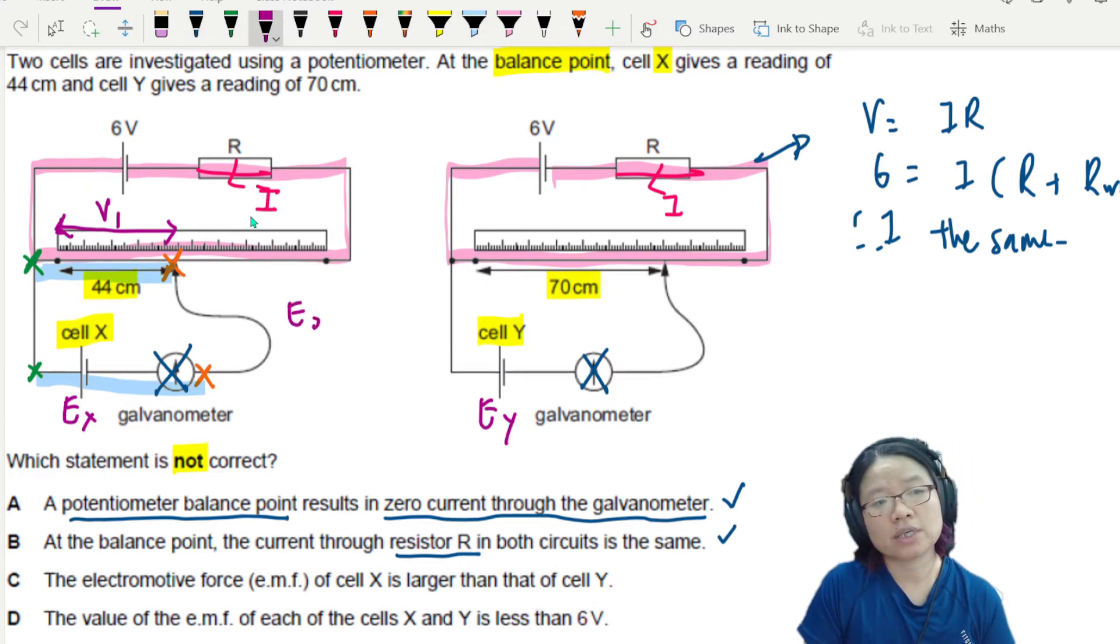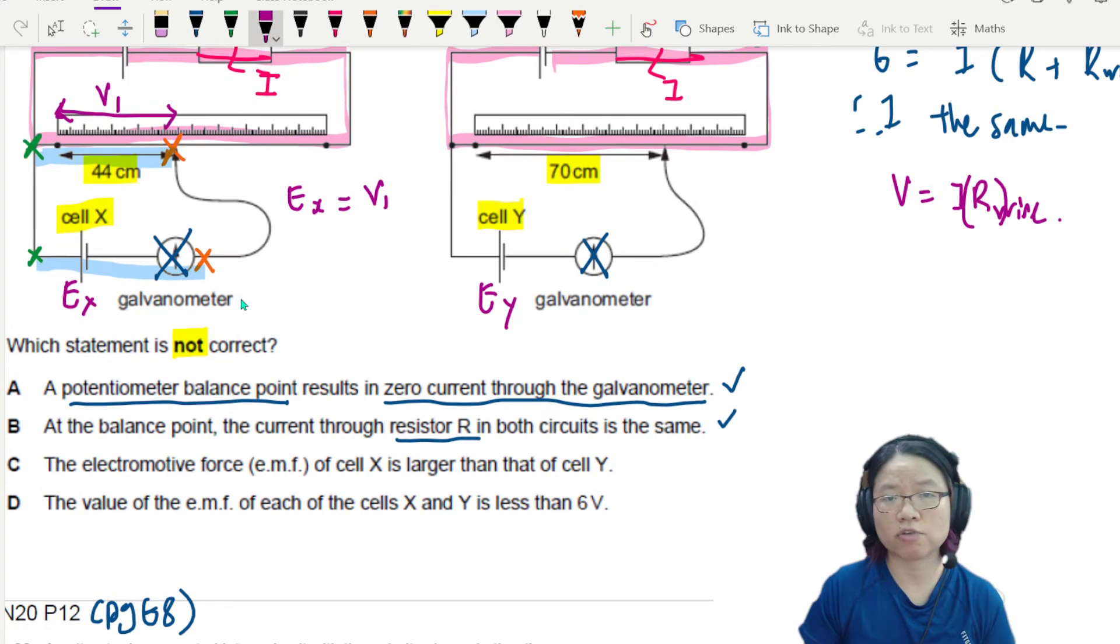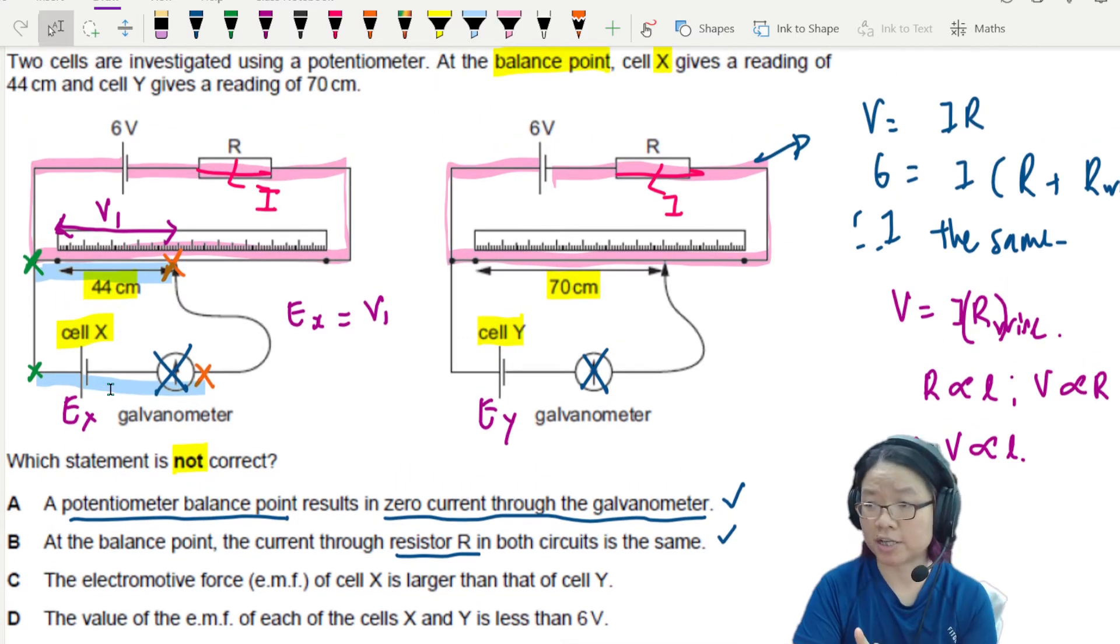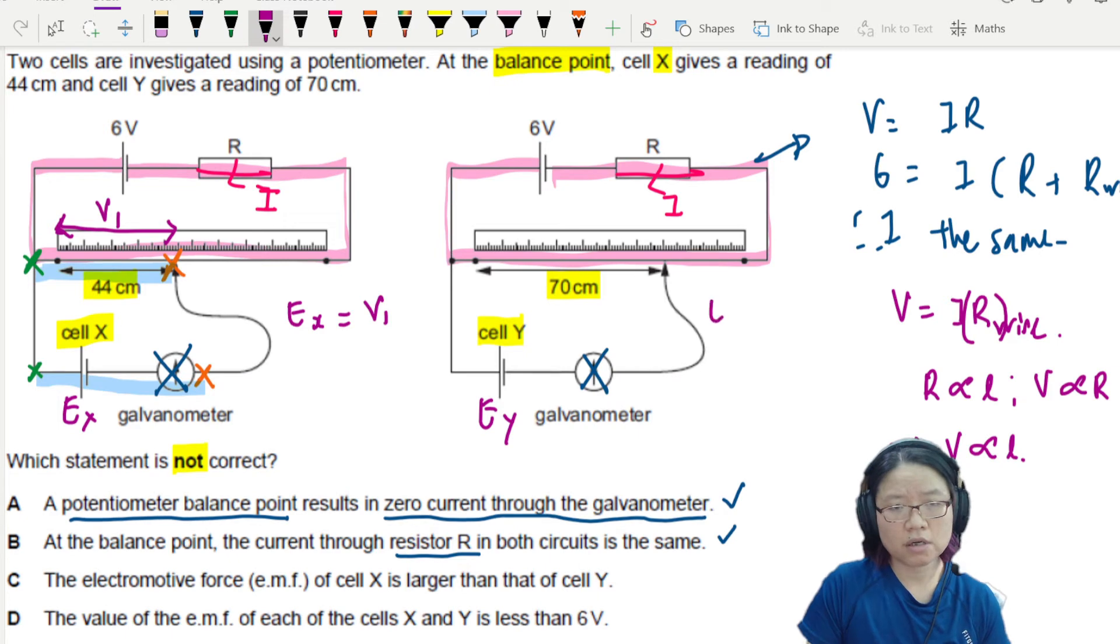So EX is equal to V1, but V1 is proportional to L because V is equal to IR. And in this case, this R is the resistance of the wire. So the resistance of the wire is proportional to the length of the wire. So the potential difference will also be proportional to R. So because of this, the potential difference is proportional to length. So it's a bit like if you remember the theory, the potential difference is proportional to length. If you need a detailed explanation, go and watch the theory video. So since potential difference is proportional to the length because resistance is proportional to the length, I can say that EX is somewhat related to 44 cm.